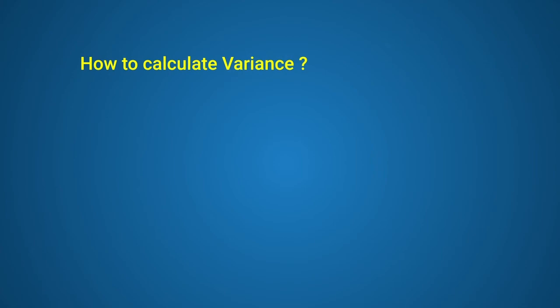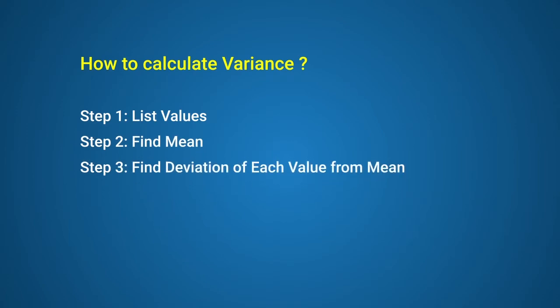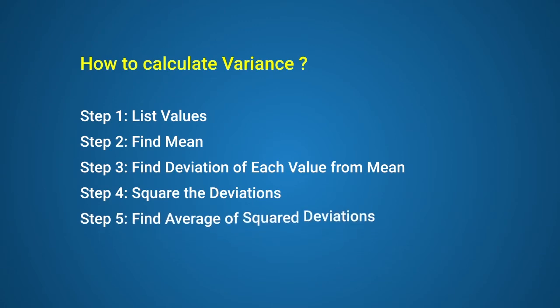Variance can be calculated using five simple steps. First, list all values in a data set. Second, find the mean using the steps described in the first video. Third, find the deviation of each value from the mean. Fourth, square the deviations. And fifth, find the average of squared deviations.